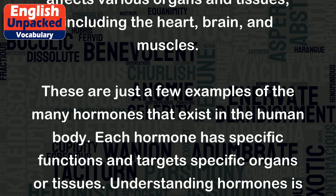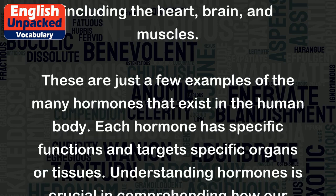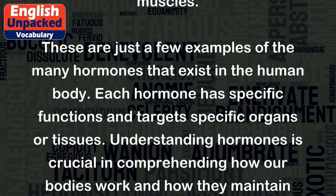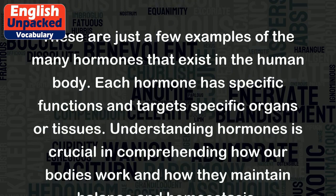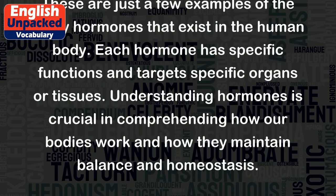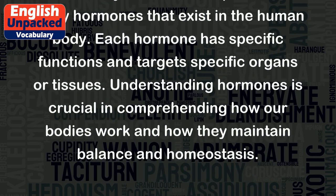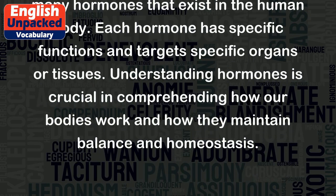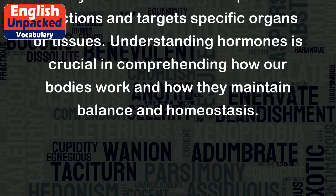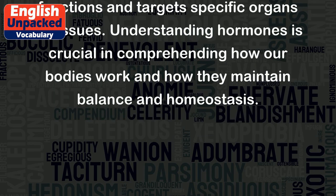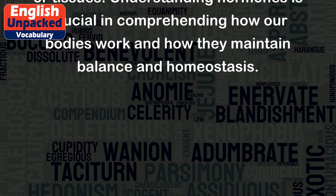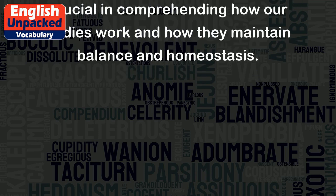These are just a few examples of the many hormones that exist in the human body. Each hormone has specific functions and targets specific organs or tissues. Understanding hormones is crucial in comprehending how our bodies work and how they maintain balance and homeostasis.